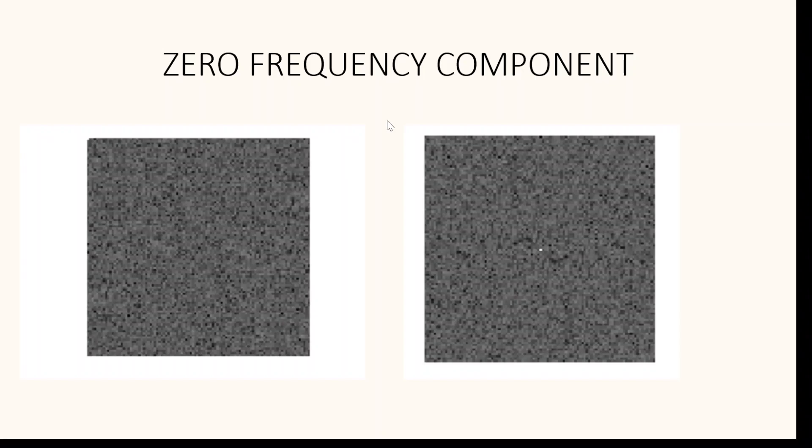Hello everyone, in this video let us talk about the significance of FFT shift while converting an image from spatial domain to frequency domain. In the context of image processing, the 2D Fourier transform of an image maps the spatial domain pixel values to the frequency domain where the image content is represented in terms of spatial frequencies.